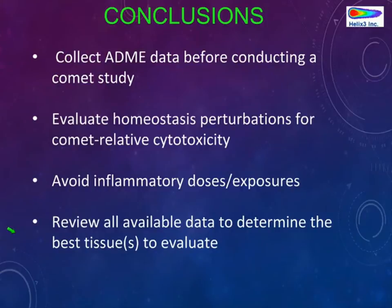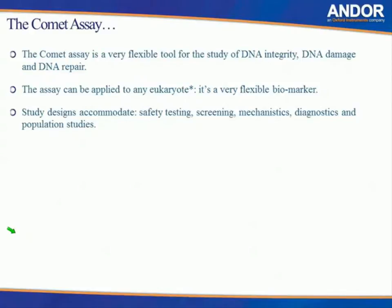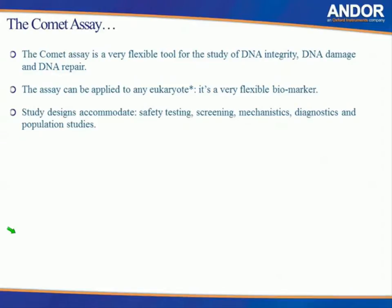I'm going to tell you about Comet 7 and the new features we've introduced, and also show you a little bit of background about the comet assay. The comet assay is a very flexible tool for the study of DNA integrity, damage, and repair, and can be applied to any eukaryote — making it a very flexible biomarker. By the right kind of study design, you can use the comet assay for safety testing, screening, mechanistics, diagnostics, and population studies.